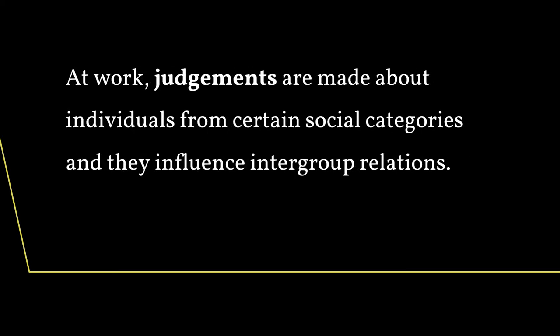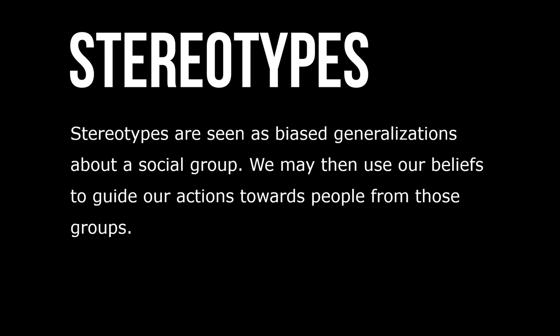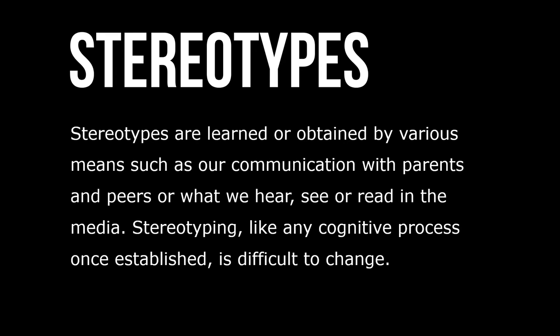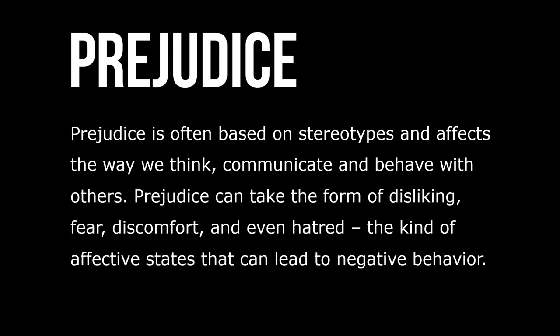At work, judgments are made about individuals from certain social categories and they influence intergroup relations. Stereotypes are seen as biased generalizations about a social group — we may use our beliefs to guide our actions towards people from those groups. Stereotypes are learned or obtained by various means such as our communication with parents and peers, or what we hear, see, or read in the media. Stereotyping, like any cognitive process, once established is difficult to change.